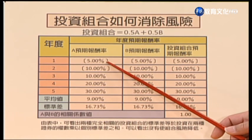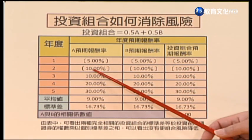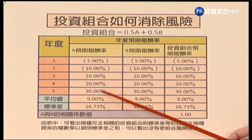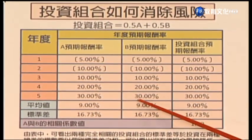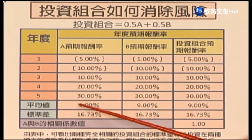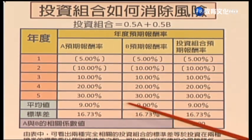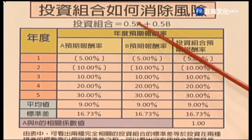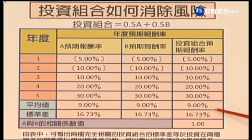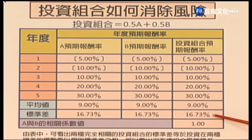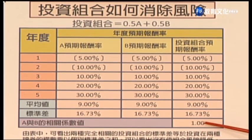如果是完全正相關的例子：投資組合一半在A股票、一半在B股票，假設有五年。A股票的報酬率：5%、-5%、-10%…第五年30%；B股票也幾乎每年一樣。它們的平均報酬一樣，標準差也一樣，如果各自投資一半一半，每一年的報酬率也都跟AB一樣，最後標準差也是一樣16.73%，這是因為兩者股票是完全正相關所造成的。